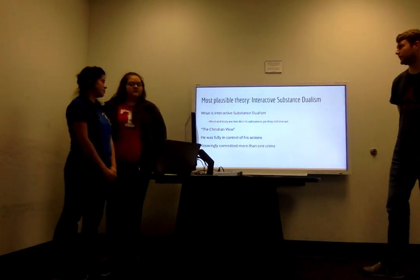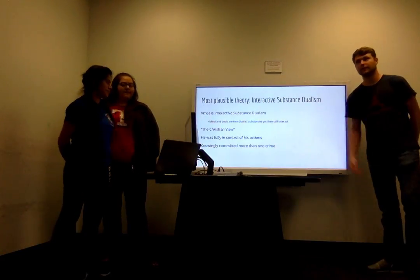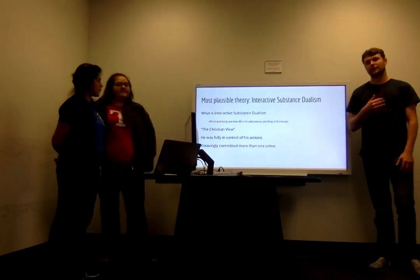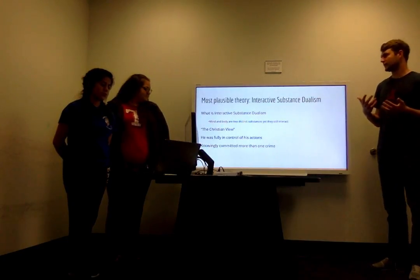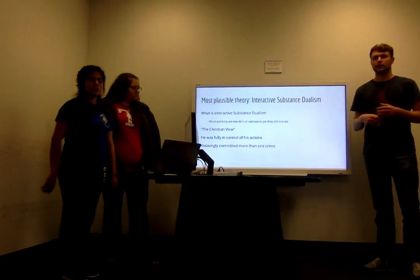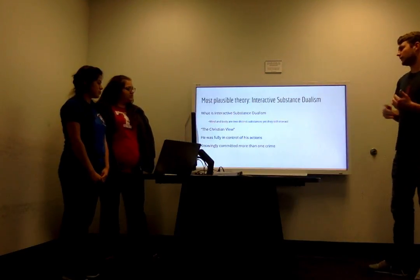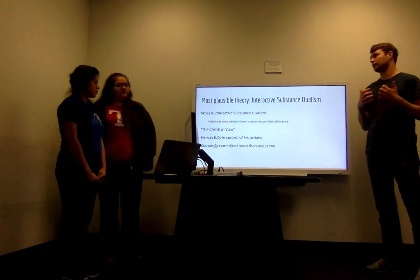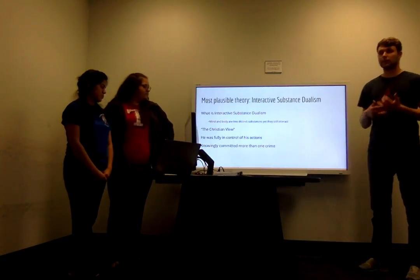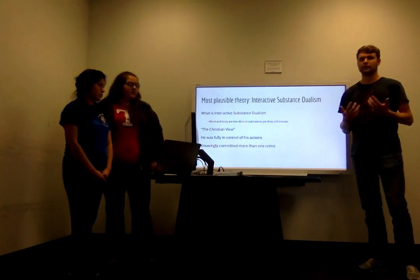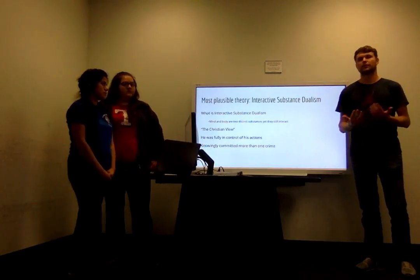What we all agreed was the most plausible theory is the interactive substance dualist view — that the mind and the body are two completely separate things that somehow connect to form who a person really is. This aligns closely with the Christian view regarding the body dying and the soul living on. Applied to the case, Sledge was fully in control of his actions — he knowingly stole the t-shirts and knowingly broke out of prison. Committing both of those crimes likely looked bad to a jury and could have been one of the main reasons he was convicted.